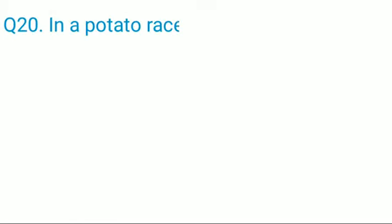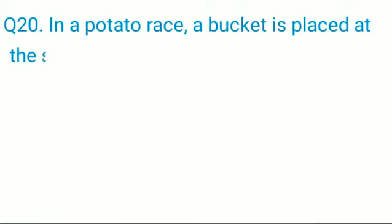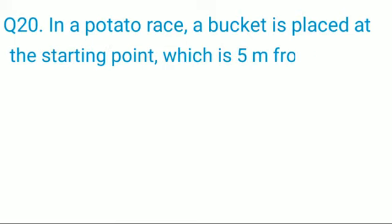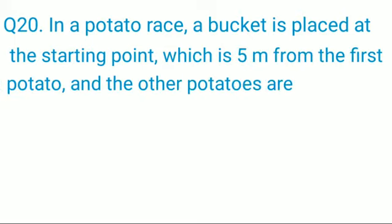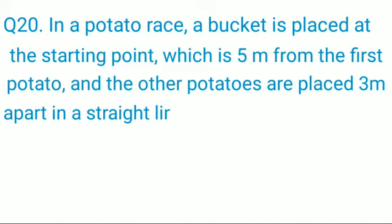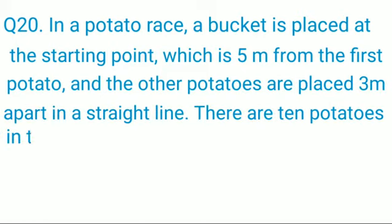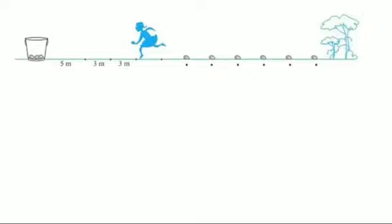In a potato race, a bucket is placed at the starting point, which is 5 meters from the first potato, and the other potatoes are placed 3 meters apart in a straight line. There are 10 potatoes in the line, as you can see in the figure.